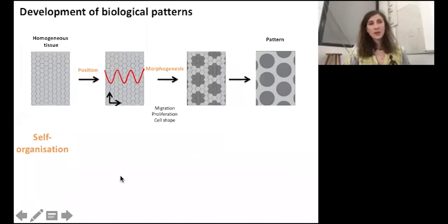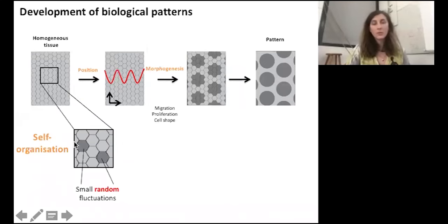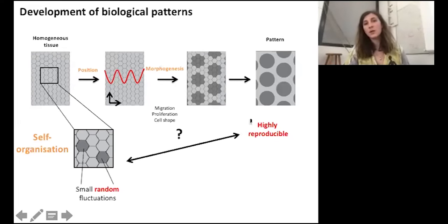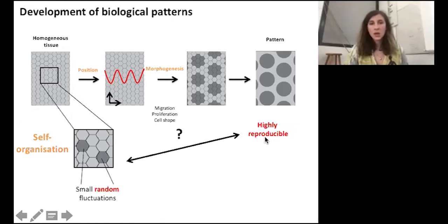A major theory to explain the formation of pattern is self-organization. In self-organizing systems, the positional information is intrinsic to the developing tissue and corresponds to small random fluctuations that cause the tissue to spontaneously organize into a pattern. These stochastic systems are by essence highly variable and they are therefore hardly reconcilable with the reproducibility seen in natural populations which is key to fitness. So, what can be the mechanism that channels the self-organization to ensure its outcome?